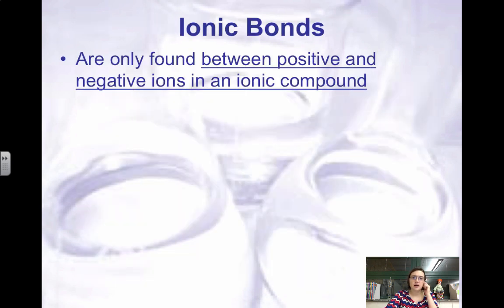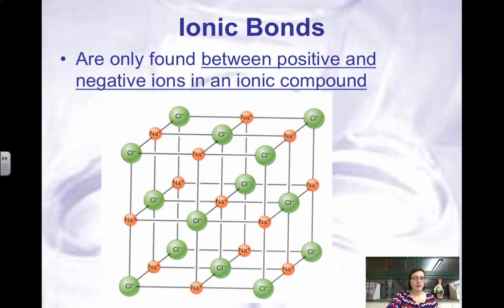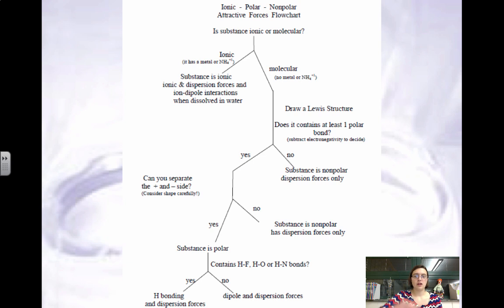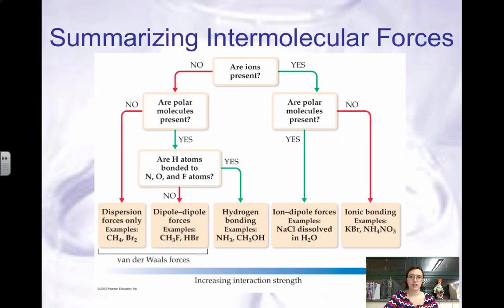Ionic bonds are only found between positive and negative ions in an ionic compound. Ionic compounds typically exist in a crystal lattice — a very arranged structure with ions at specific points. These require full positive and full negative charges. There is also a flow chart that allows you to determine if a compound is ionic or covalent, and then identify the intermolecular forces such as hydrogen bonding, dipole-dipole, and so on.